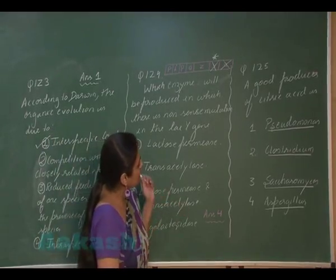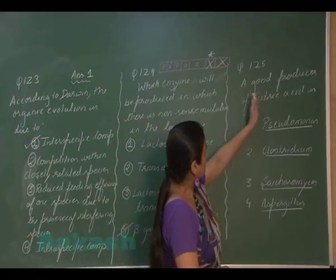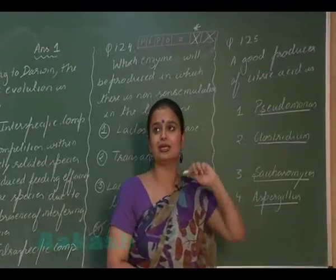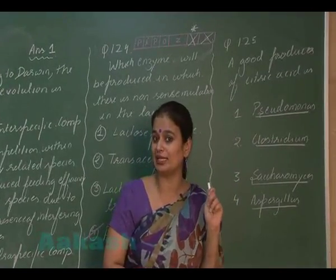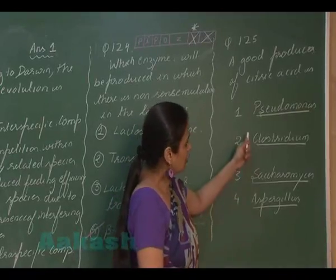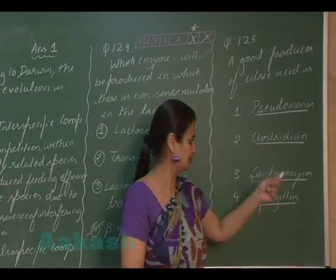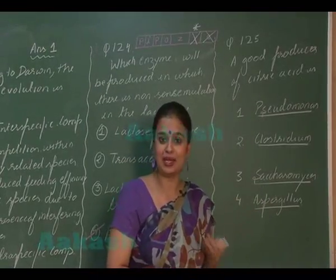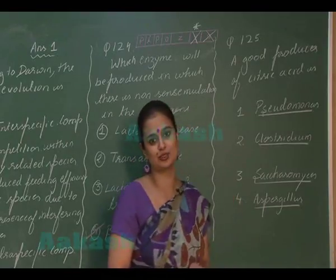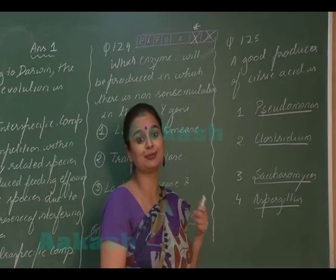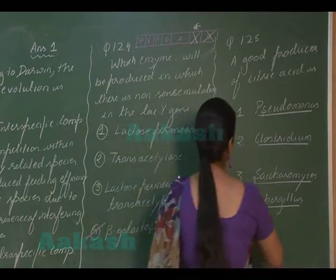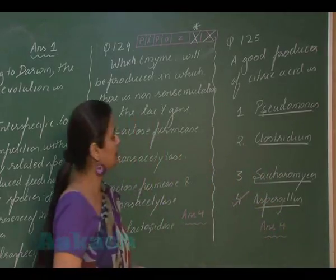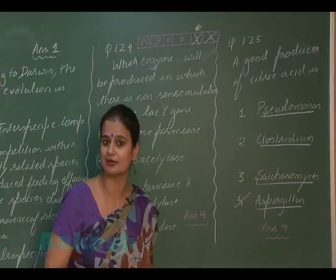Question 125: A good producer of citric acid is? Pseudomonas putida is an oil eater. Clostridium species form butyric acid. Saccharomyces is used in the brewing and baking industry. Aspergillus niger is used for the formation of citric acid. So the right answer for this question is option 4.